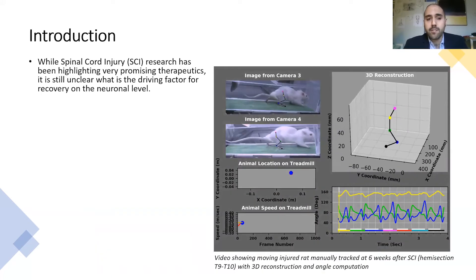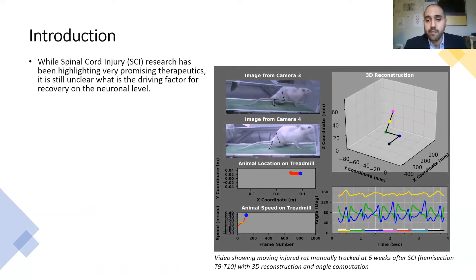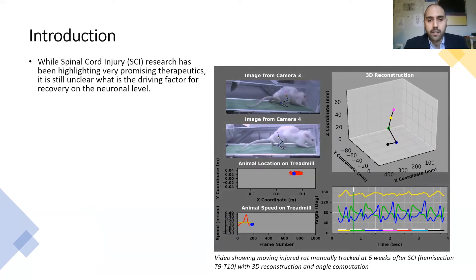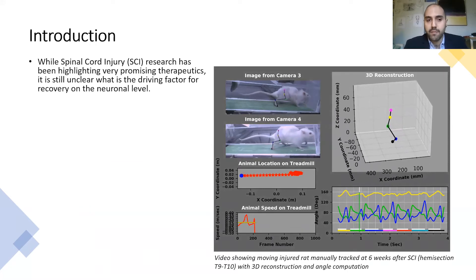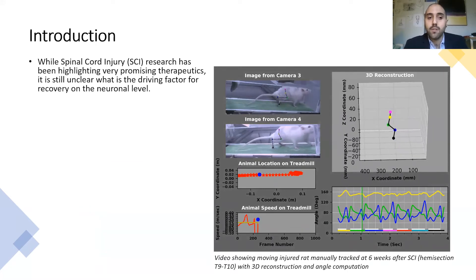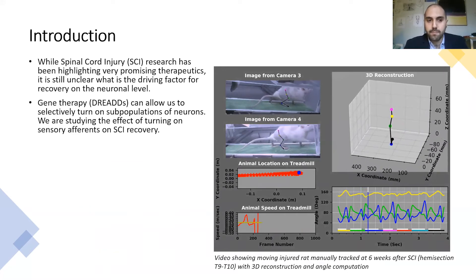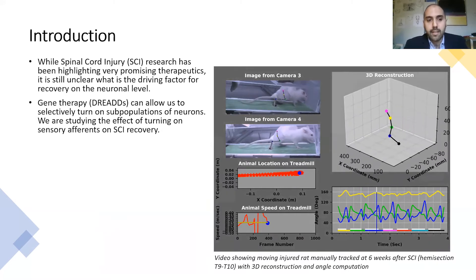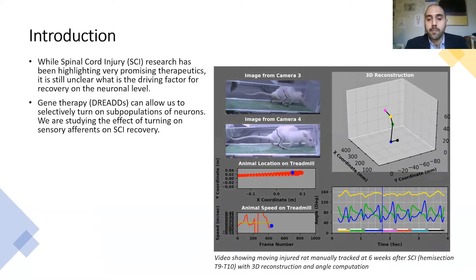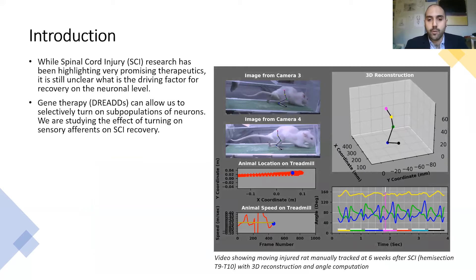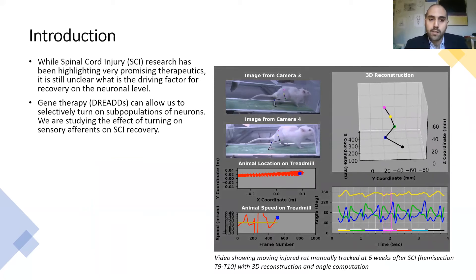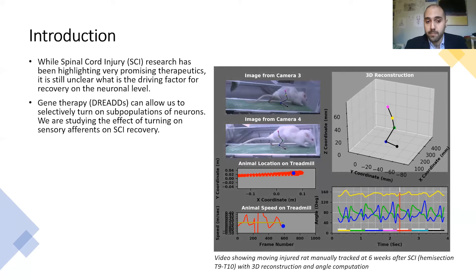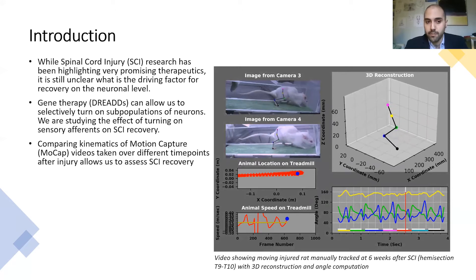Spinal cord injury research has been showing some very promising therapeutics. However, to date, it is still unclear what is the main and sole driving factor for recovery on the neuronal level. Gene therapy, like DREADDs for example, can allow us to selectively turn on subpopulations of neurons. In our lab, we are studying the effect of turning on large afferent sensory fibers on spinal cord injury recovery.